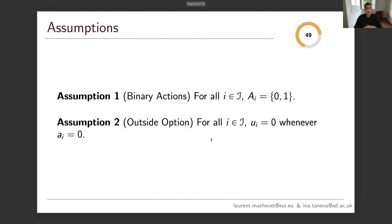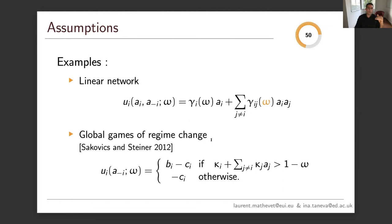Moving on to another application of the characterization: the optimality results. We identify environments in which an optimal Bayes correlated equilibrium must satisfy our characterization, which means that horizontal or vertical transmission will be globally optimal. These environments are binary action environments in which players have an outside option — they can opt out and secure zero by playing action zero — with additional complementarity assumptions. You can think of linear networks or global games of regime change.